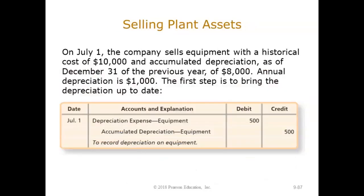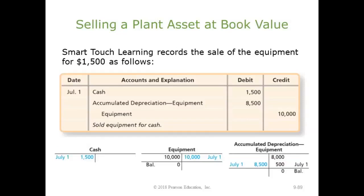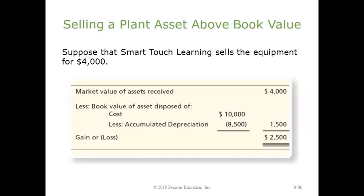Now let's look at selling the plant asset. Again, we get accumulated depreciation up to date — debit depreciation expense and credit accumulated depreciation on equipment $500 for the half year. In this case, we're going to sell the equipment for $1,500. The book value on the equipment is also $1,500. Since cash received equals book value, the gain or loss is zero. The entry is: debit cash $1,500, debit accumulated depreciation $8,500, and credit equipment $10,000.